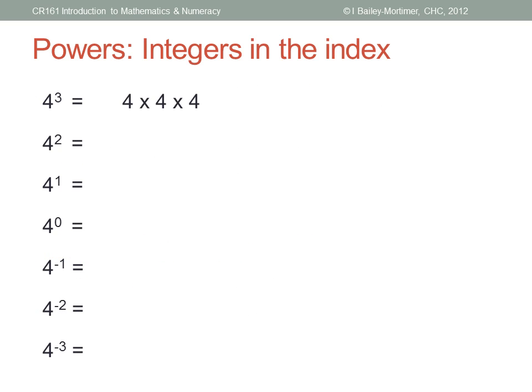Four to the power of three is four times four times four. Four to the power of two is four times four. Four to the power of one is just four — anything to the power of one is just itself. So what's four to the power of zero? I could multiply any previous example by one without changing it. Now I still have the one but I'm not multiplying by four at all — I've just got one. Anything to the power of zero is one.